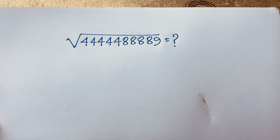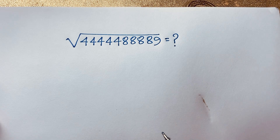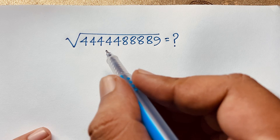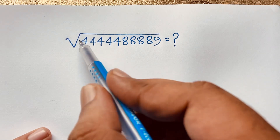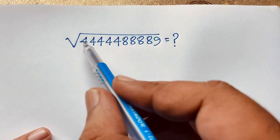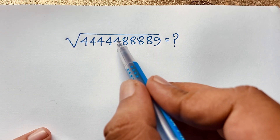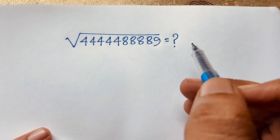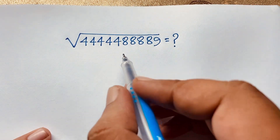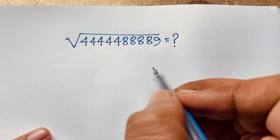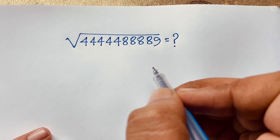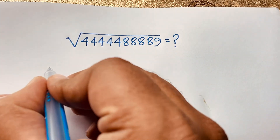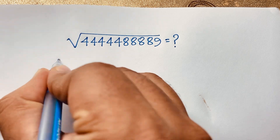Hello everyone, welcome to Raster Skills Room. Today we'll solve a nice German Master Olympiad question. This question is: square root of 44444 times 88889 is equal to what? Let's start the solution.